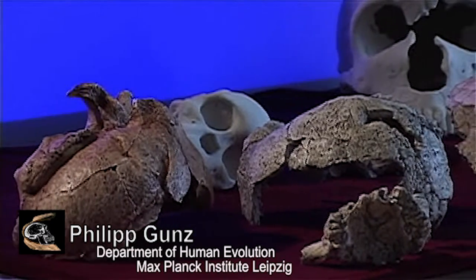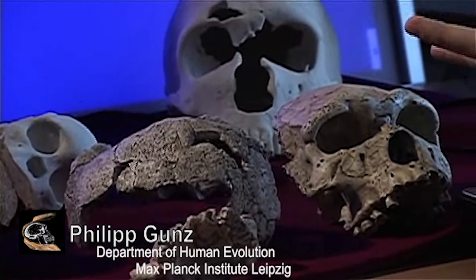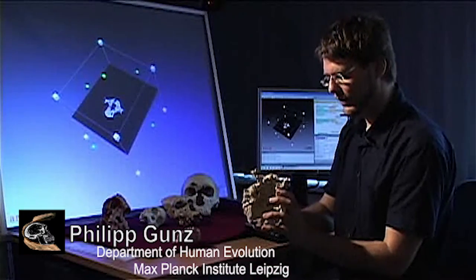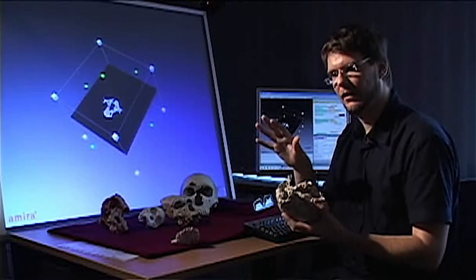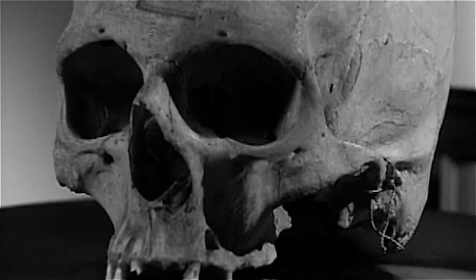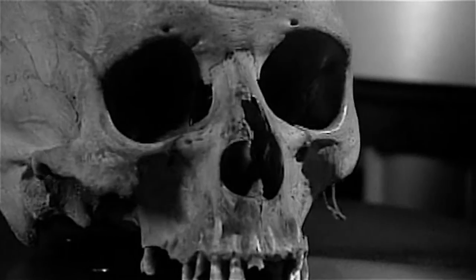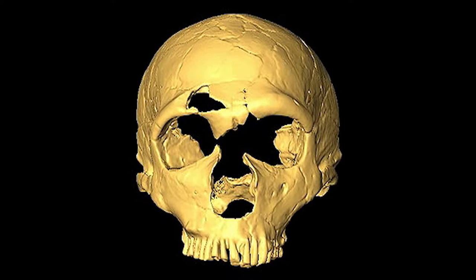Fossil reconstruction is like a three-dimensional puzzle. The problem is that some parts are missing and some parts are sometimes distorted. We take these pieces and put them into a medical CT scanner so we can get three-dimensional X-rays. What you end up with is hundreds of slices, and from these slices you can reconstruct the original form.